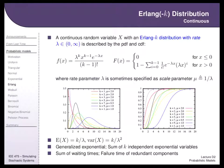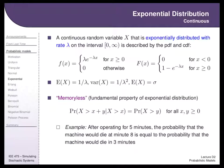A counter-example to memorylessness: the time until a bus arrives. You walk up to a bus stop and see many people waiting — you know the bus is probably coming soon, because waiting time tells you something. That memory means it's not exponential. For the exponential, if all you know is the mean and that outcomes are non-negative, the exponential is the least-biased distribution to choose until you get more information about the structure of the system. Also note: for an exponential, the standard deviation equals the mean — they're both one over lambda.